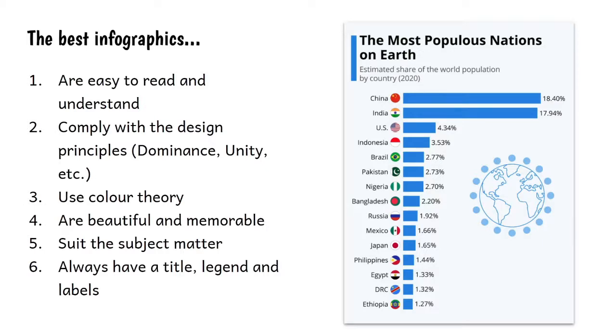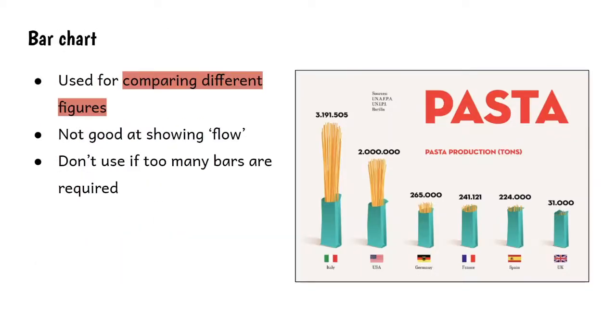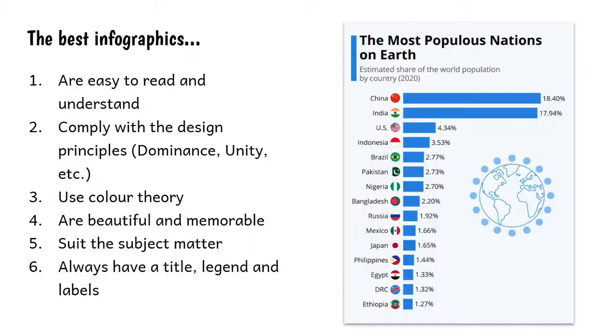Number four: infographics must be beautiful, they must be memorable. Number five: they must suit the subject matter. You'll notice that graph there suits the subject matter. We've got flags to represent countries and we've got stems of spaghetti to represent the bars. So always go that extra mile to try and find some way to design your infographics so that it suits the subject.